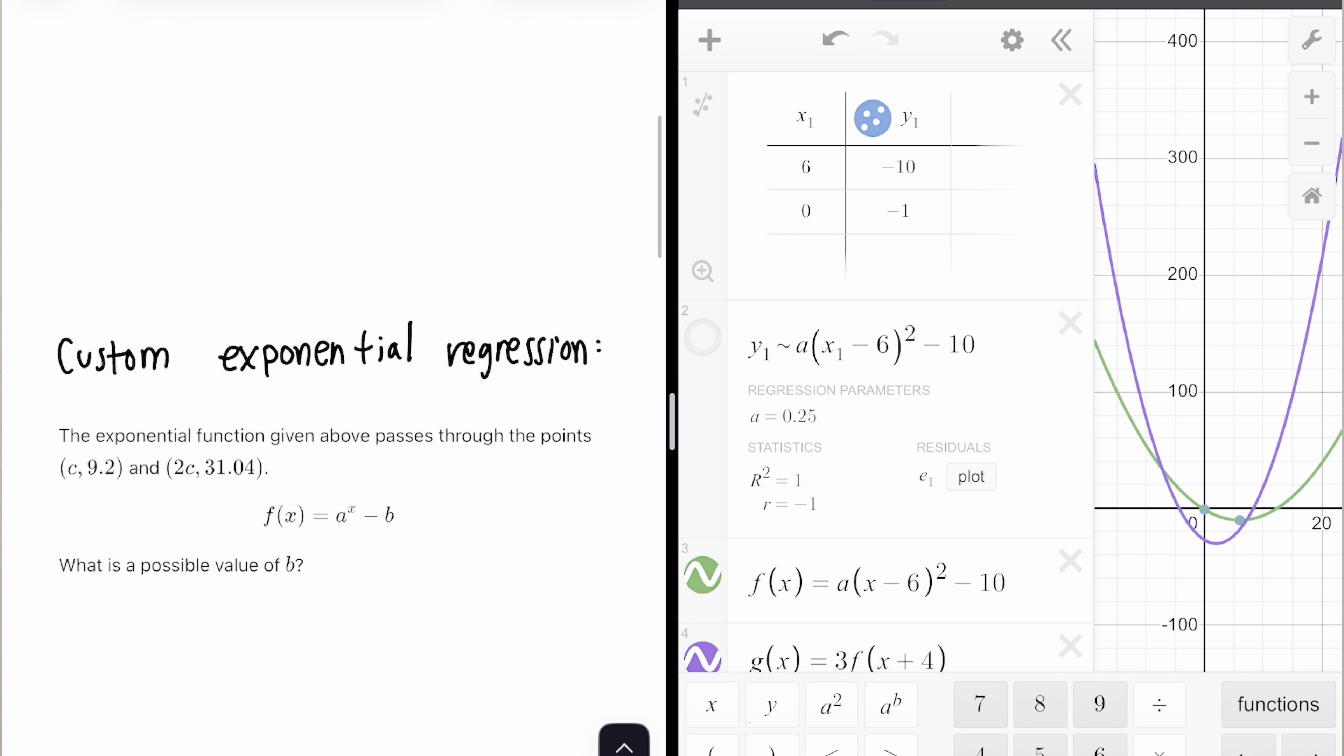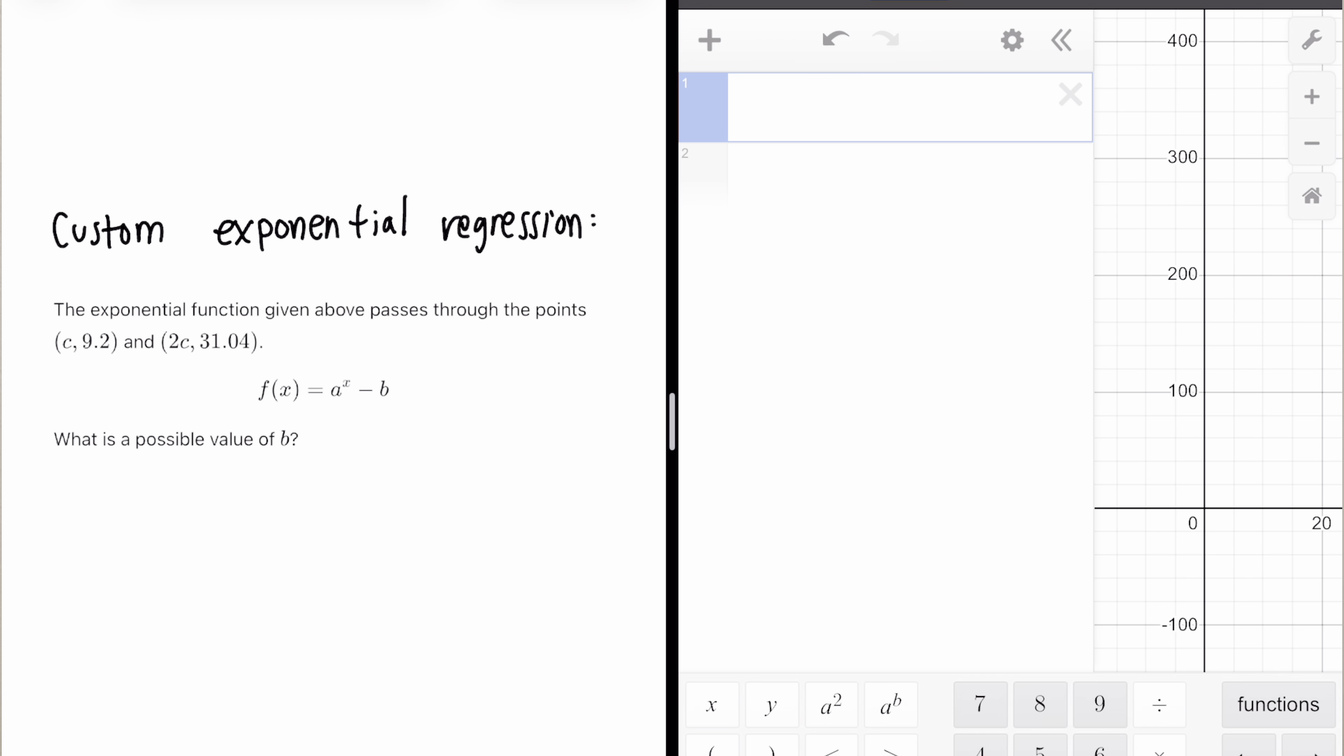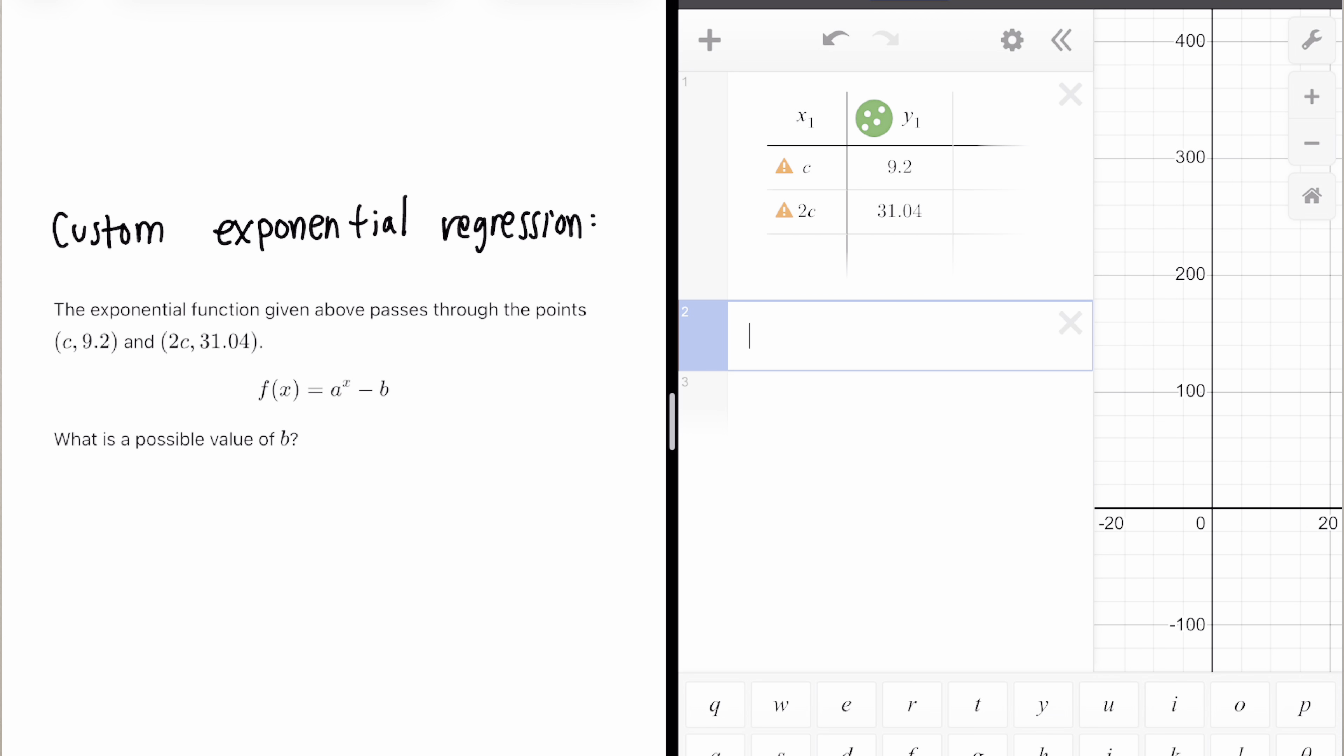Last regression question. And then we'll move on to a bonus. The exponential function given above passes through two points (C, 9.2) and (2C, 31.04). F(X) equals A to the power (X minus B). This is our custom form. What is a possible value of B? Just like the first question, what we want to do is define C because otherwise the table just doesn't work. And how we bring up a slider again is we press A and then the variable we want a slider for. And then you press the slider for C, you delete AC.